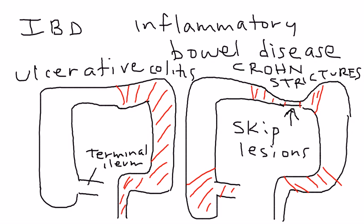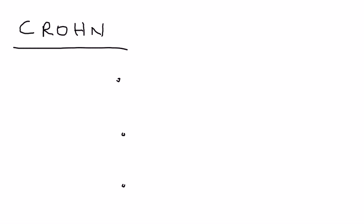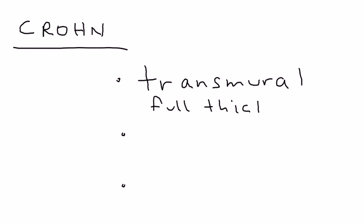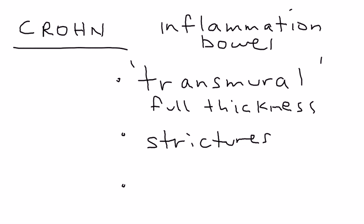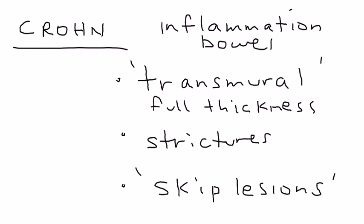Before getting into signs and symptoms, here are a few important things to know about Crohn's disease. First, the inflammation is transmural, meaning it affects the full thickness of the bowel — that's a key term on licensing exams. Second, there is stricture formation in addition to inflammation. Third, there are skip lesions, meaning the inflammation is not continuous but occurs in sharply demarcated areas.